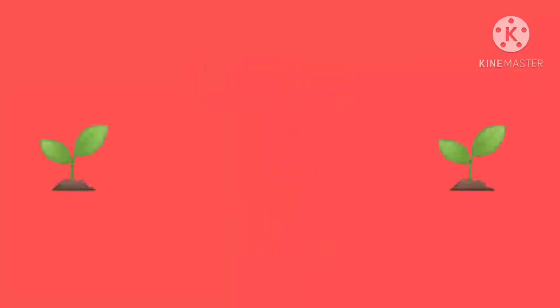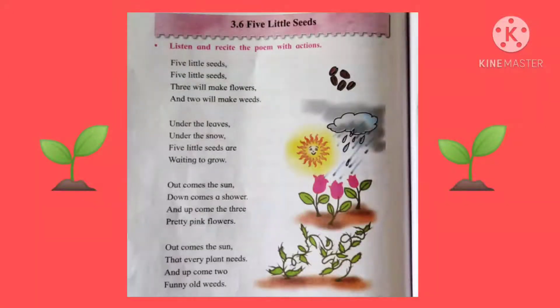Five little seeds, five little seeds. Three will make flowers and two will make weeds. Under the leaves, under the snow, five little seeds are waiting to grow.